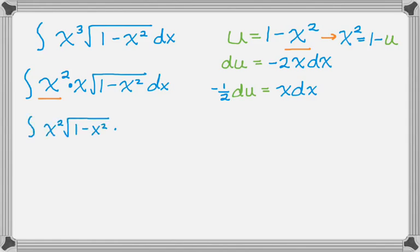To make it a little more explicit, I will rewrite the integral, or the integrand. So I can just sub right in. So x squared is 1 minus u. And then 1 minus x squared was u. And then x dx is negative 1 half du. So those are all the substitutions that I'm going to make.